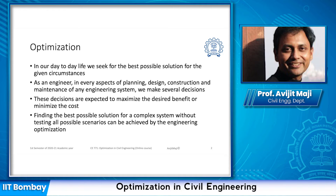In our daily life, we do various optimization. For example, if we want to purchase something from a grocery store, there could be multiple grocery stores with various prices, and these grocery stores could be at various distances. When we go out to purchase our intended product, we try to optimize based on the price and the time we have in our hand. Likewise, as an engineer, in every aspect of planning, design, construction, and maintenance of any engineering system — whether it is related to transportation, geotechnical, structural, or any of the civil engineering specializations — we make several decisions.